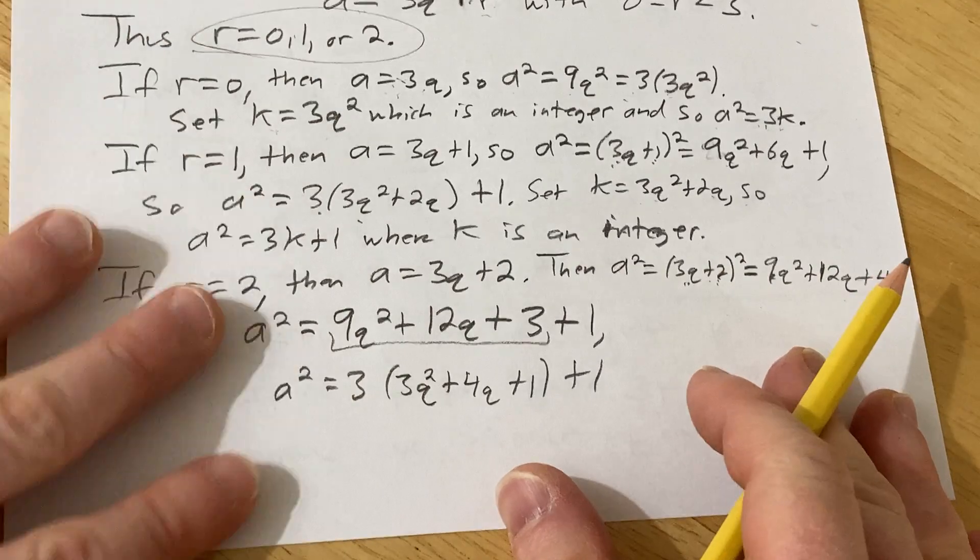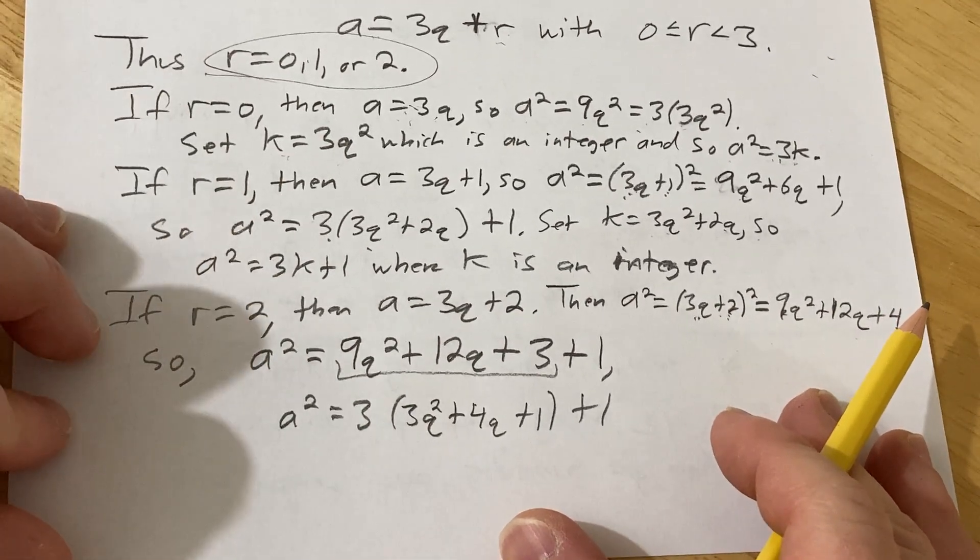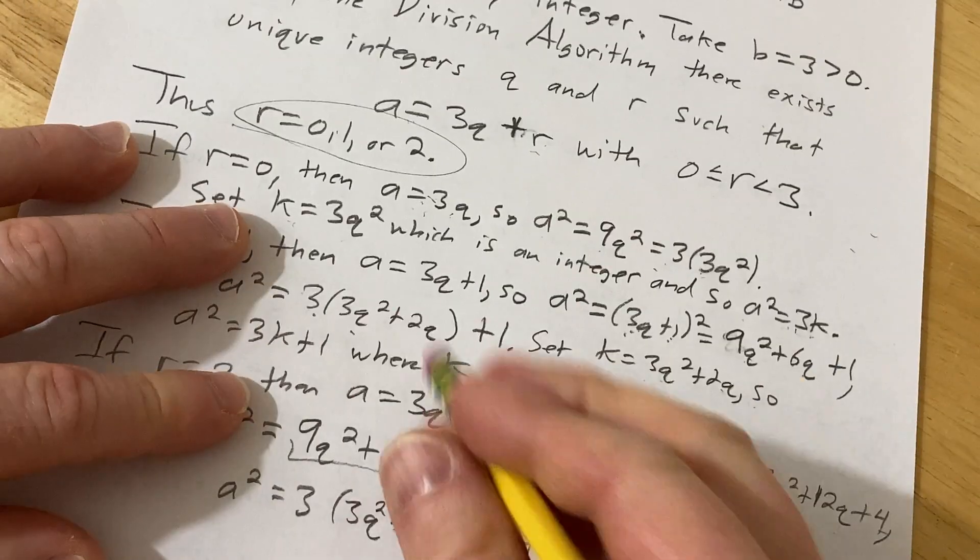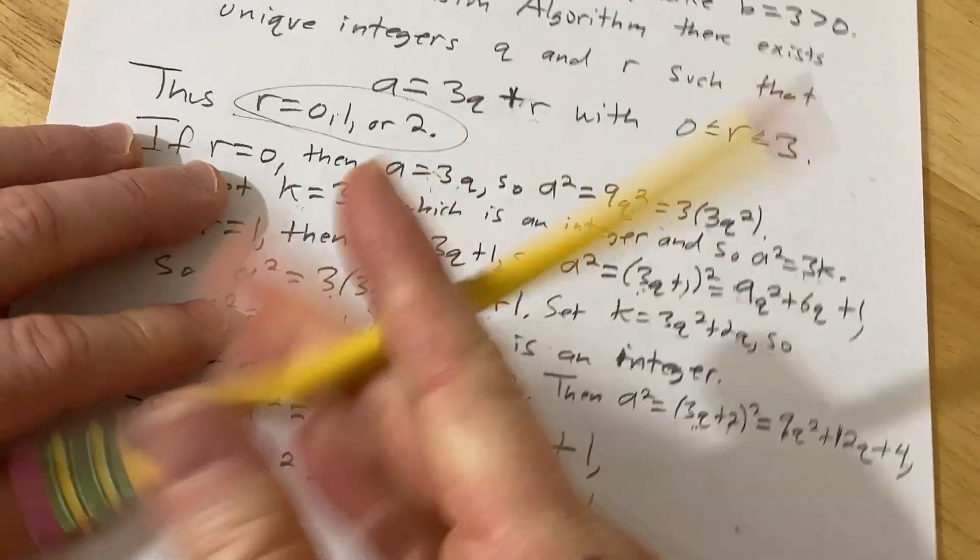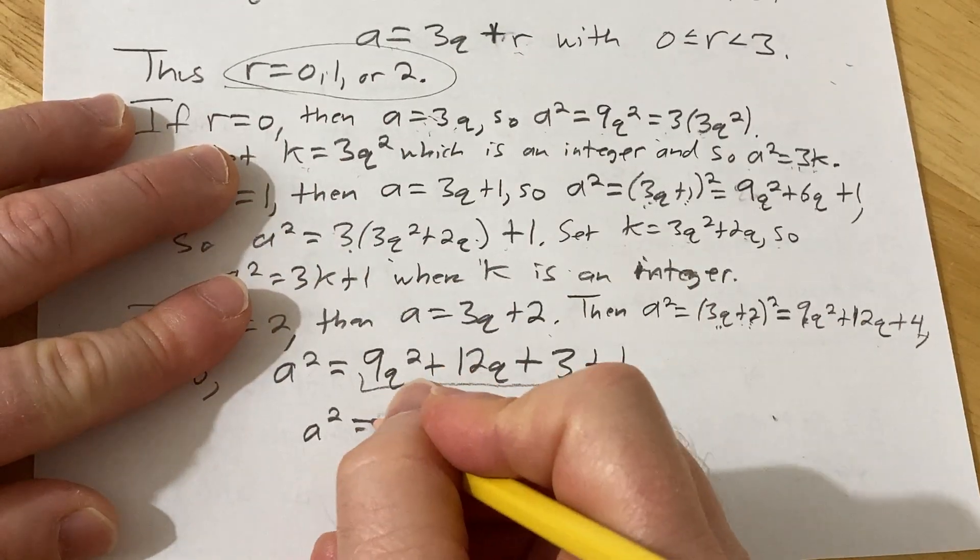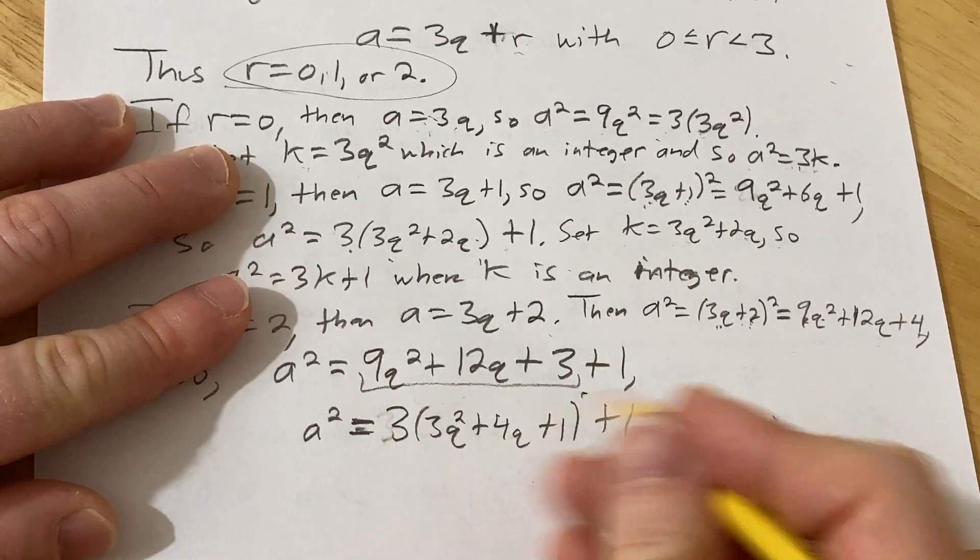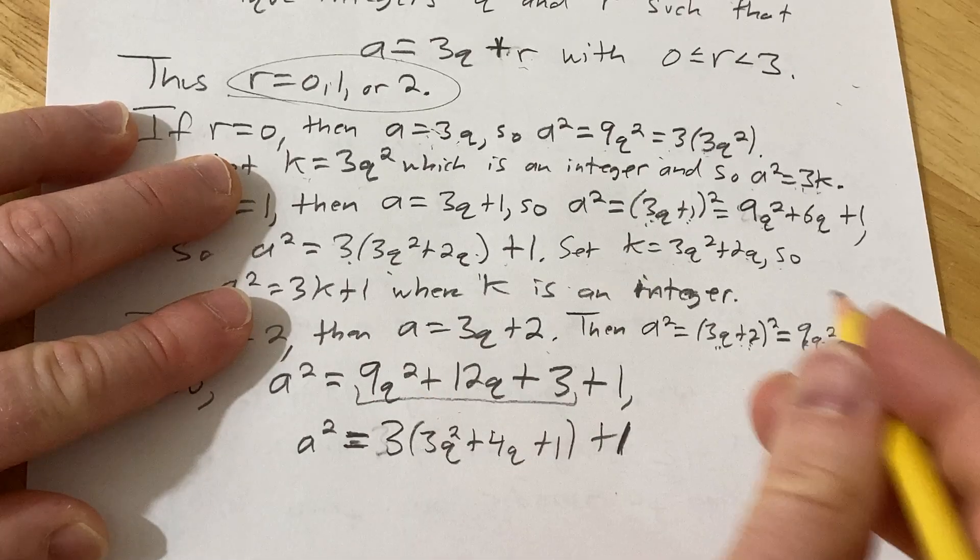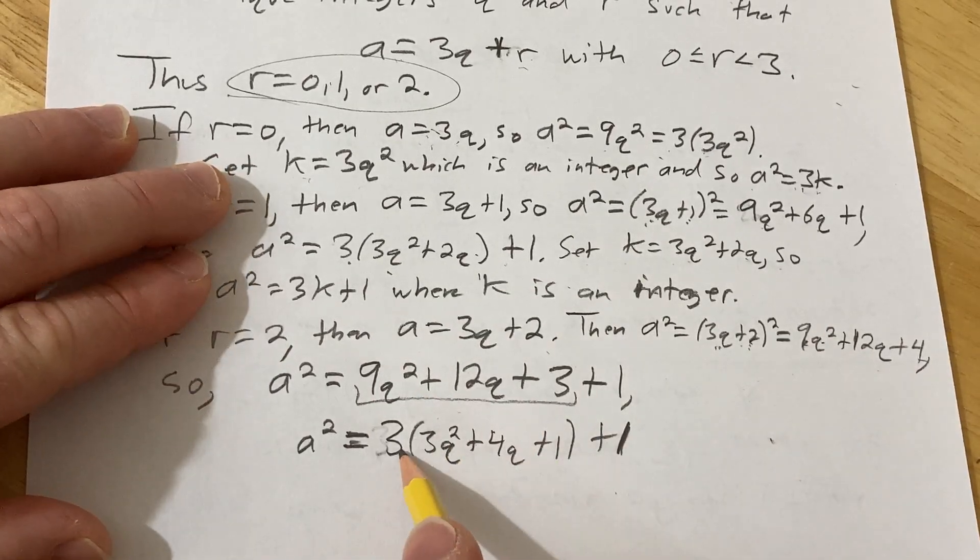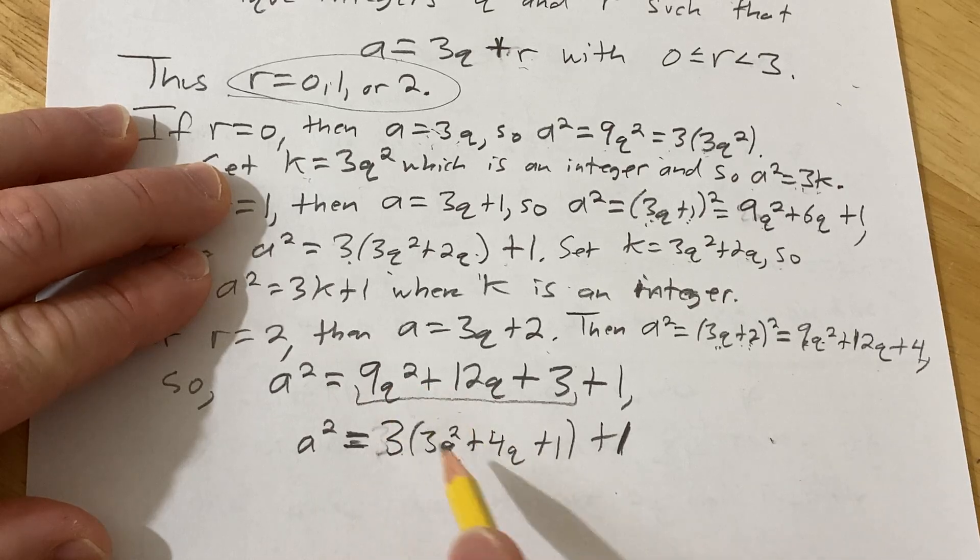So, and it's really not that long. You can skip a lot of this. I'm just being very elaborate and trying to explain everything. Let's just check. 3 times 3q squared is 9q squared, 3 times 4q is 12q, 3 times 1 is 3.